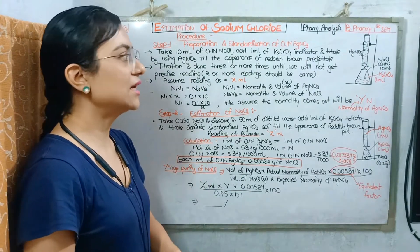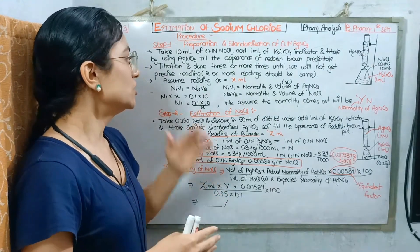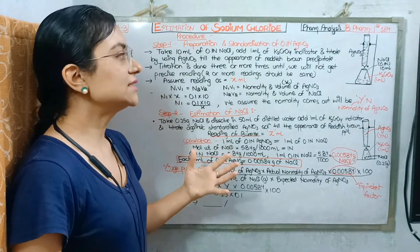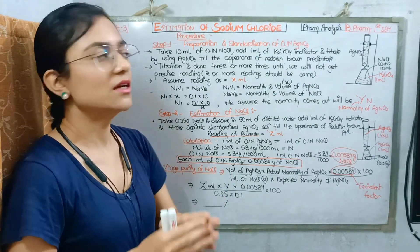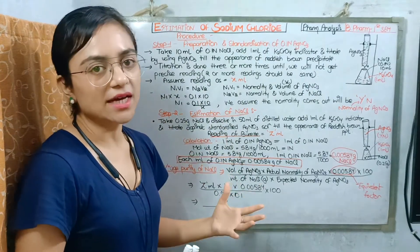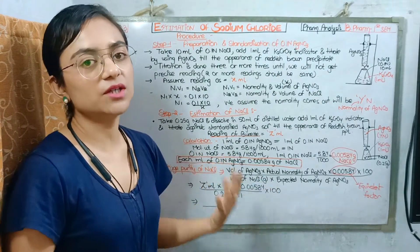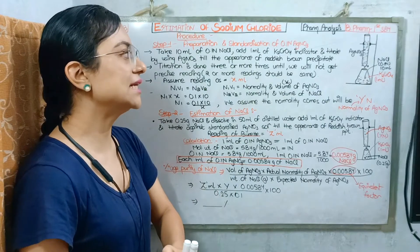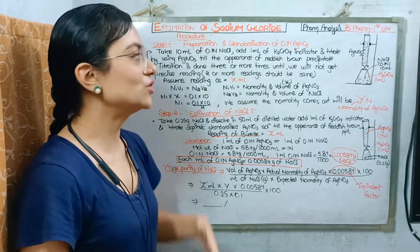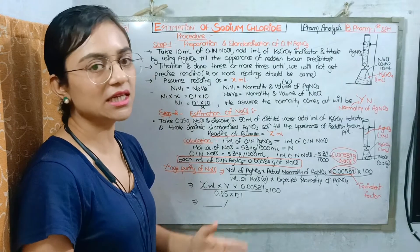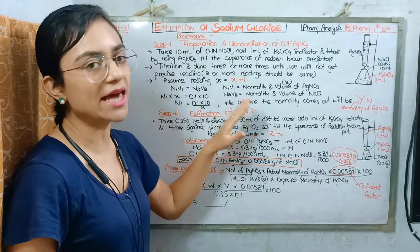We can repeat the titration more than 3 times until we get precise values. The readings are considered concordant when we get the same reading twice — for example, 10.5 ml, 10.3 ml, 10.5 ml. We take the precise reading and assume that x ml is the volume consumed.